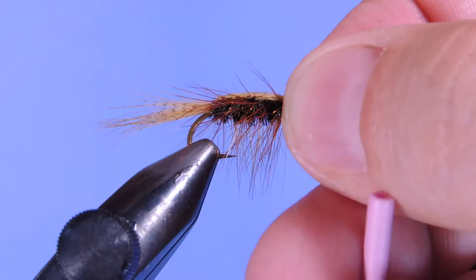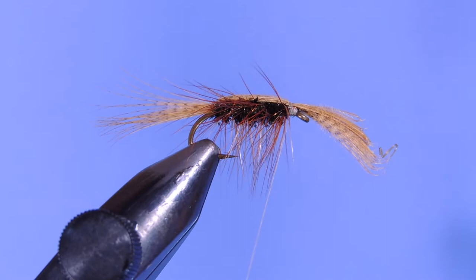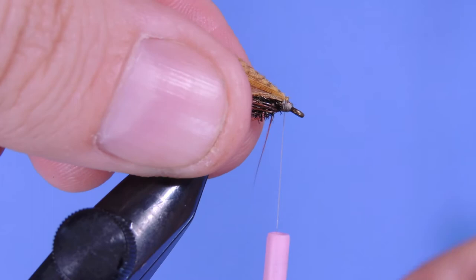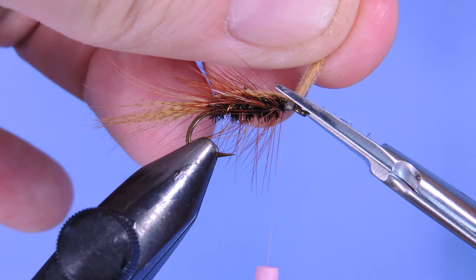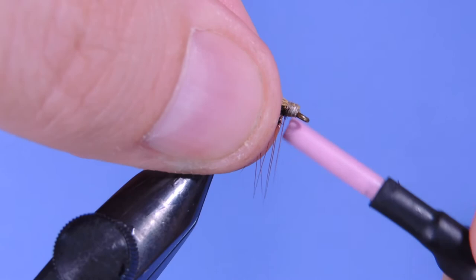And we're just going to slowly bring that over top and give that a couple wraps. Couple wraps underneath, then we'll lock it down. Trim that off and just clean the head up a little bit.